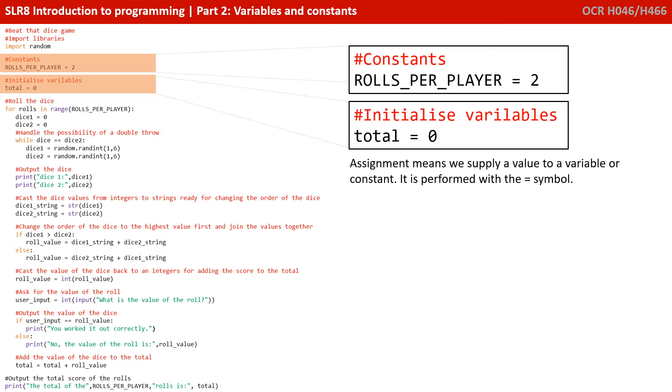Assignment is simply when we give or supply a value to a variable or constant. So in both the previous lines of code we've looked at, we are supplying a value to a variable or a constant. An assignment is performed with the equal symbol. You assign the value on the right of the equal symbol to the variable or constant on the left.